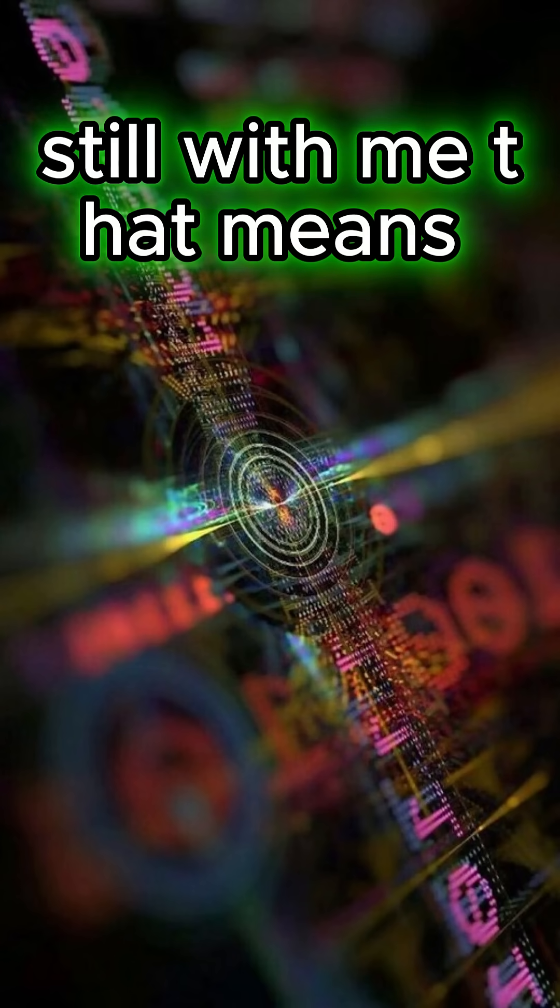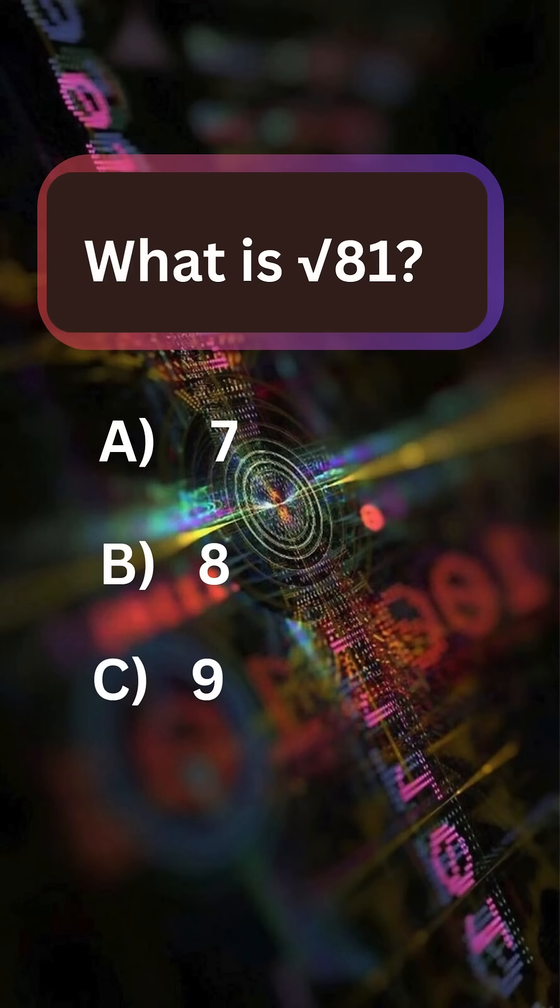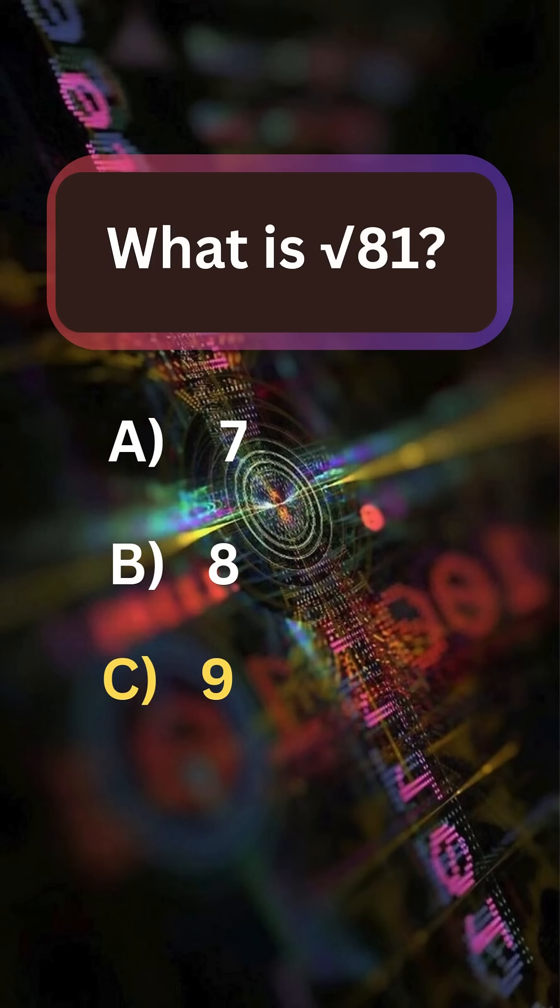Still with me? That means your brain is built different. What is the square root of 81? Answer: 9.